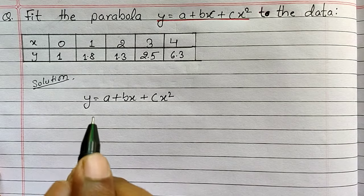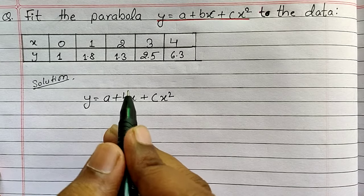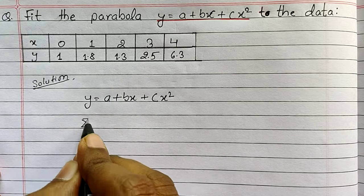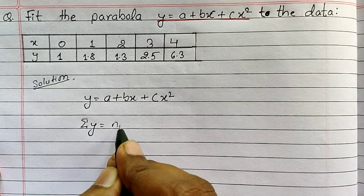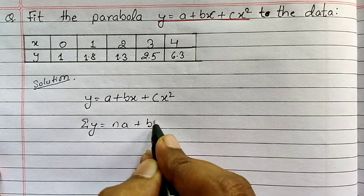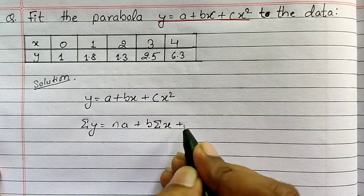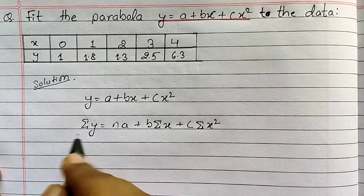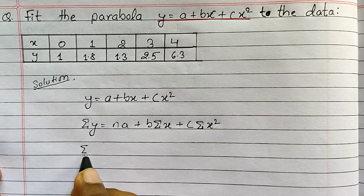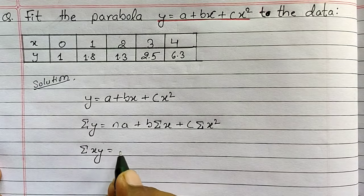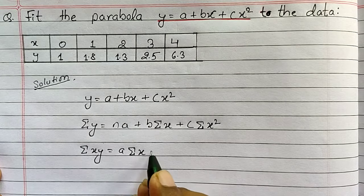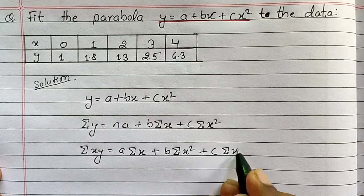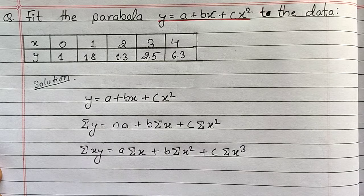The process is the same as fitting the curve for a straight line. The first equation will be: summation y equals to na plus b summation x plus c summation x squared. Now multiply this equation by x — the second equation will be: summation xy equals to a summation x plus b summation x squared plus c summation x cubed.